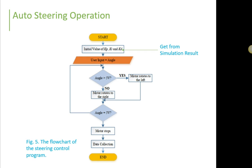So, this is the autosteering operation algorithm in the whole system. So, the initial value of KP, KI and KD is actually get from the simulation result. The simulation result is done by using MATLAB and Simulink.